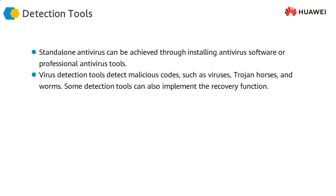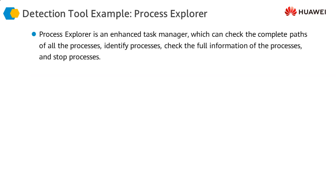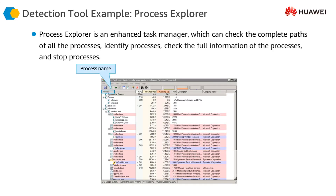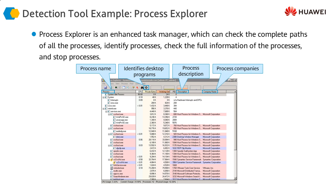We can have detection tools working on our systems. For example, most of you would know about the Task Manager on Windows. Similarly, we can have other detection tools for detecting viruses, worms, or Trojans, which can graphically show us that certain viruses or Trojans are running on our system. One tool available on Windows is Process Explorer, an enhanced task manager. Using Process Explorer, we can see if there is an unusual process running on our system and try to remove that process or software which is potentially a virus infecting our PC.